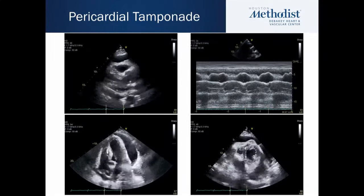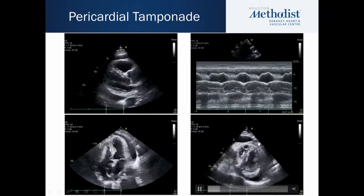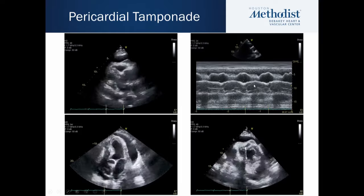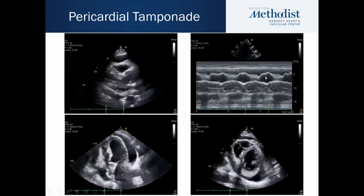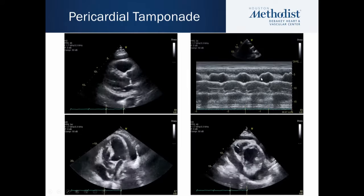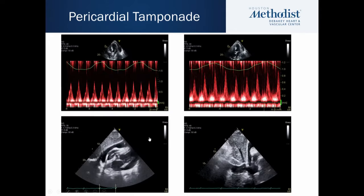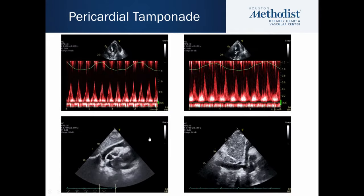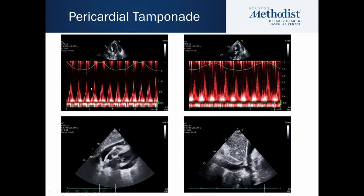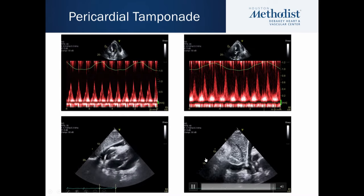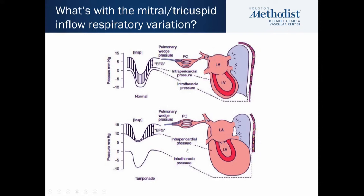Let's talk about tamponade. Here is an easy case — a large circumferential effusion. Notice the compression of the right ventricle during diastole. Always look at the M-mode, using its very high temporal resolution to establish inversion of the RV free wall in diastole. Notice also the right atrial compression during systole. With pericardial tamponade there's going to be respiratory variation — you can see variation in the mitral inflow and pulmonary veins, as well as a dilated IVC consistent with high right atrial pressures.